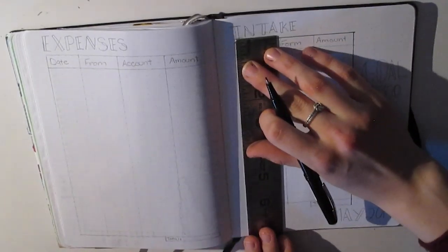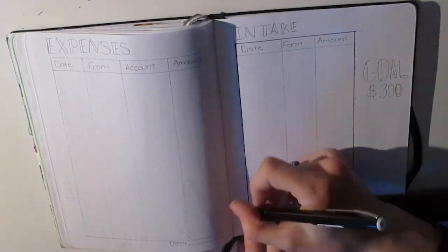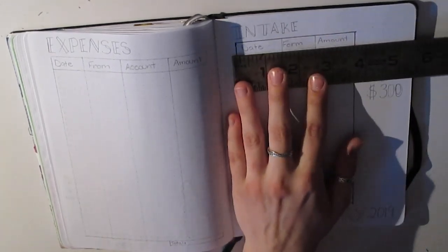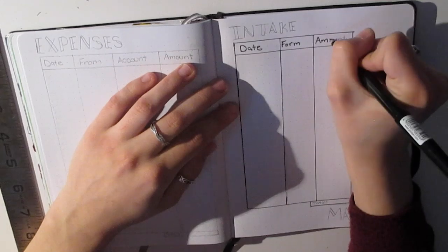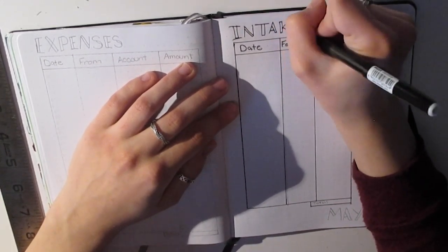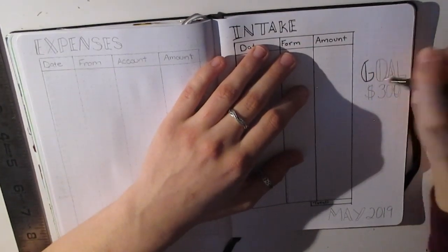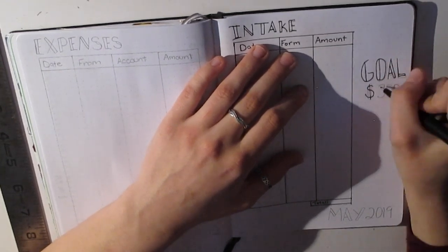I kept my expenses tracker pretty much the same throughout my bojo. I'm not sure if intake is the right word, but it's the one I've used since the beginning, so I'm just going to go with it. On the expenses side it's broken down into four columns: place or from, account, debit credit or cash, and amount.